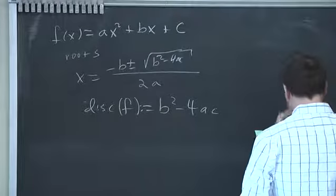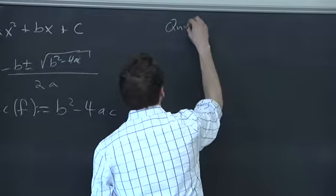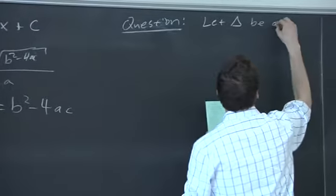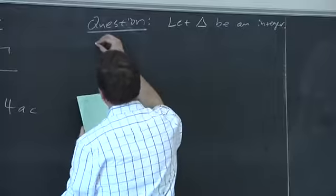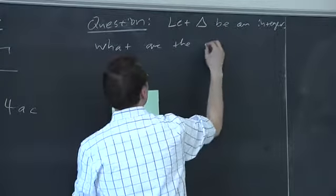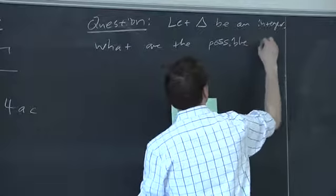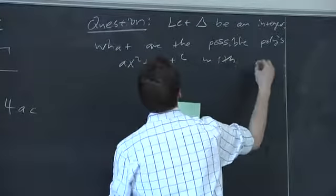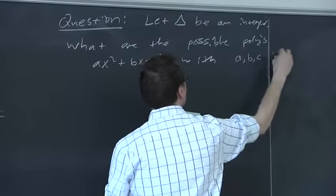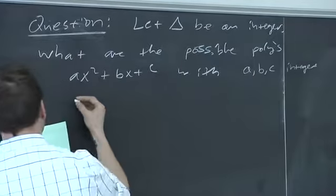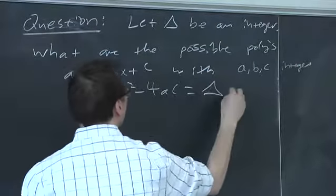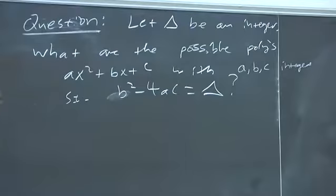So this is the question I want to talk about. Let delta be an integer. What are the possible polynomials ax² + bx + c with a, b, and c integers such that b² − 4ac equals delta? In other words, I want to classify polynomials with a given value for the discriminant.